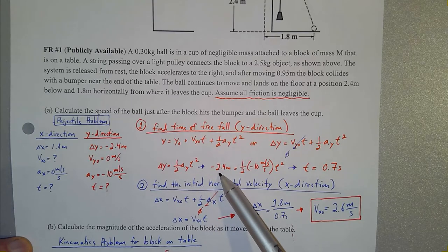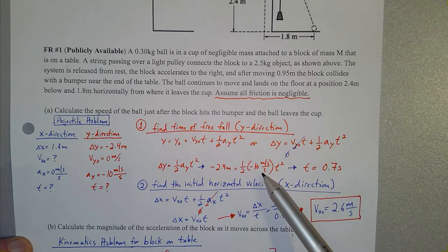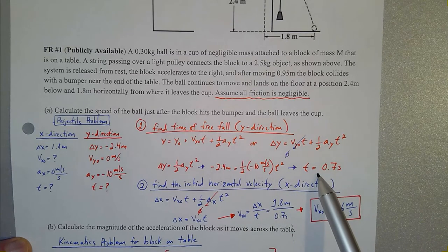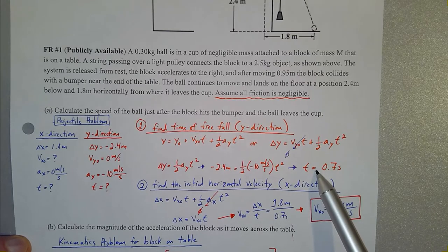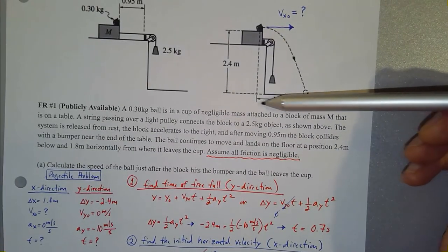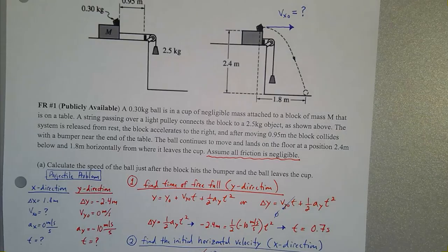The change in y position is negative 2.4 meters. Plugging in the acceleration of negative 10 meters per second squared and solving for t, we find that time is about 0.7 seconds. This means it takes 0.7 seconds to fall vertically 2.4 meters while traveling 1.8 meters horizontally.